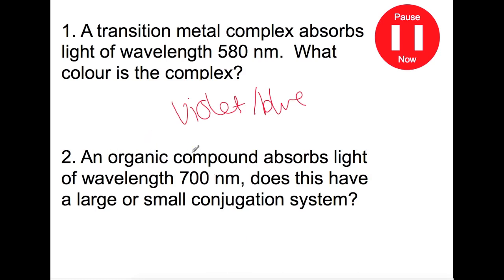For question two, an organic compound absorbs light of wavelength 700 nm. Does this have a large or small conjugation system? 700 nm is equivalent to red on the color field, and this is of a lower energy. Therefore, this must have quite a large conjugation system if we're going to be absorbing quite a small energy, because the HOMO-LUMO gap must be quite small.